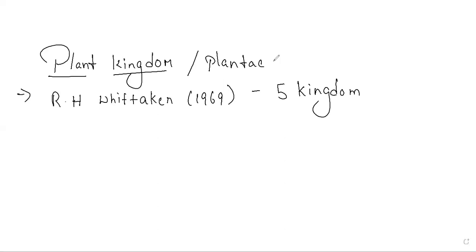In this chapter we will describe algae, Bryophyta, Pteridophyta, Gymnosperms, and Angiosperms under Plantae or Plant Kingdom. The highest level of plant kingdom is occupied by flowering plants — the angiosperms — just as the highest level of animal kingdom is occupied by mammals.